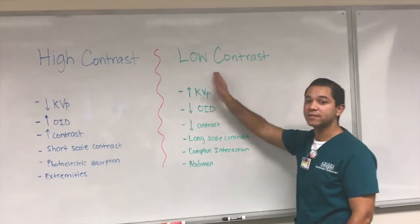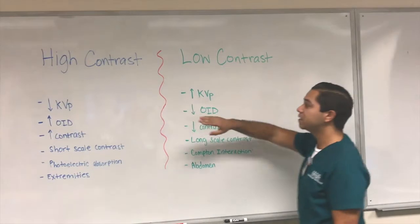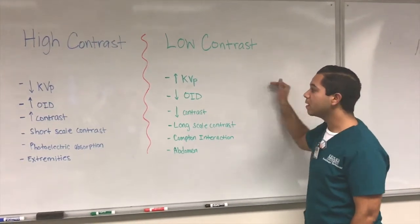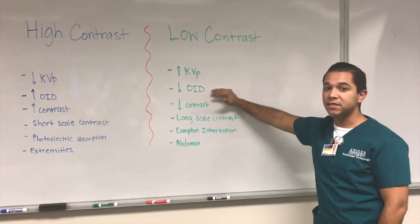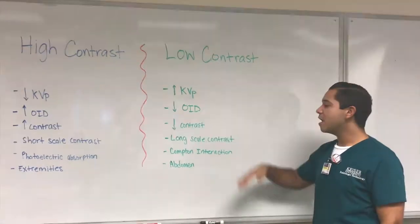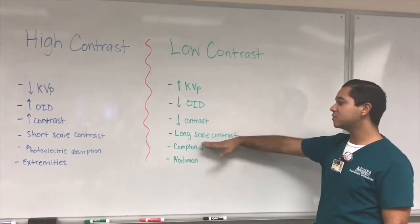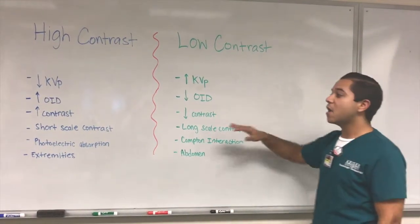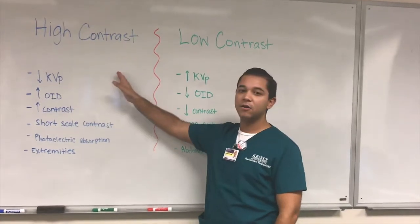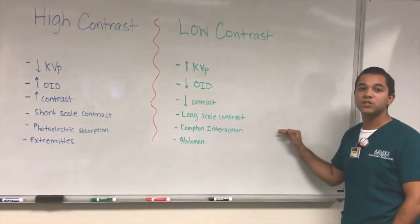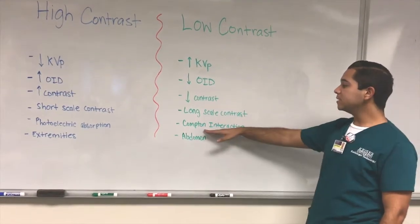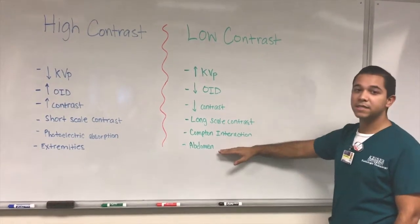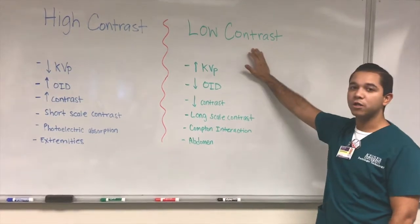Low contrast is the opposite of high contrast: there is an increase in kVp, meaning more penetration through the x-ray beam. Decreasing the OID gives low contrast, leading to long-scale contrast, which produces an image that is also black and white but with more shades of gray. Compton scatter is the interaction associated with low contrast, and the abdomen is an example because it needs more penetration to pass through its organs and tissue.